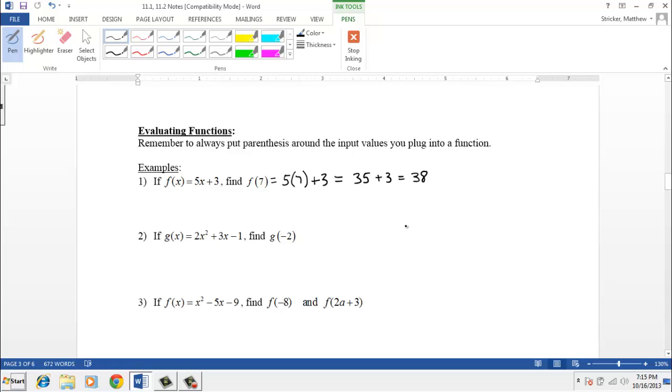We could also evaluate a quadratic equation, remembering to plug in whenever we plug in a value we put parentheses around it. So this is going to be 2 times parentheses, negative 2 squared, plus 3 times parentheses, negative 2 minus 1, and we could simplify that. This is 2 times 4 minus 6 minus 1, or 8 minus 6 minus 1, which is equal to 1. So we just found out that g of negative 2 is equal to 1. This one we found out that f of 7 was equal to 38.